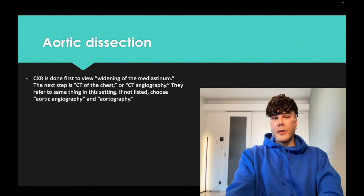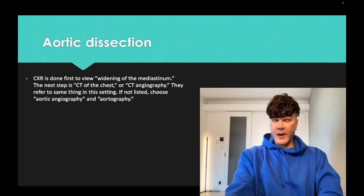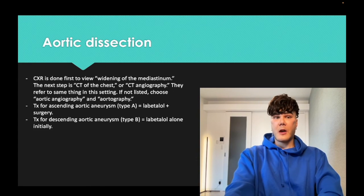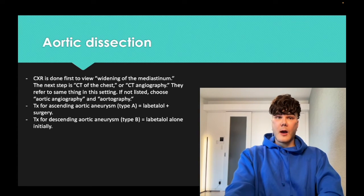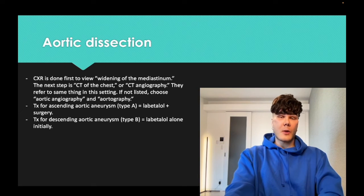For aortic dissection, they're not going to ask what's the next best step where the answer is chest X-ray. They'll tell you in the stem that chest X-ray shows widening of the mediastinum — what's the next best step now? CT of the chest or CT angiography. If neither is listed, choose aortic angiography or aortography. Labetalol is the first drug they want — if labetalol and nitroprusside are listed as separate answers, choose labetalol.